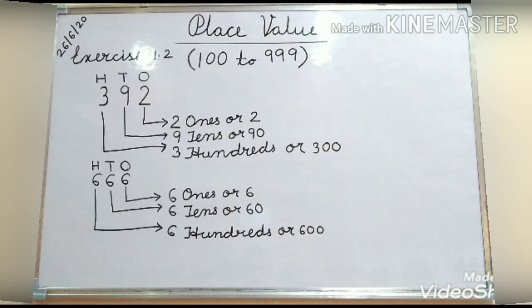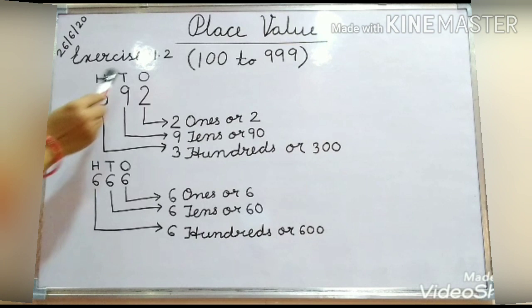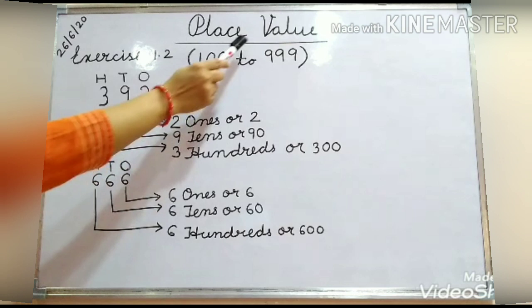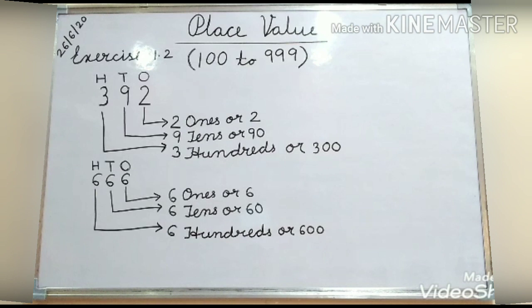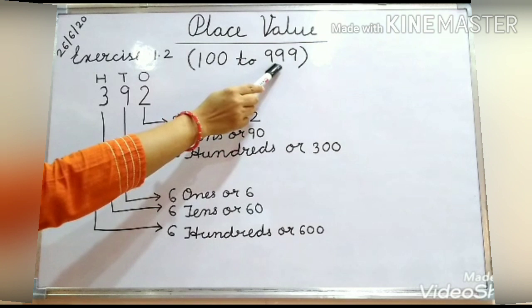Good morning, children. How are you? Hope all are fine. Let's start our today's class. Today we will do exercise 1.2 of chapter 1 and the topic is place value. In this chapter, we will learn to find out the place value of 3-digit numbers, that is from 100 to 999.